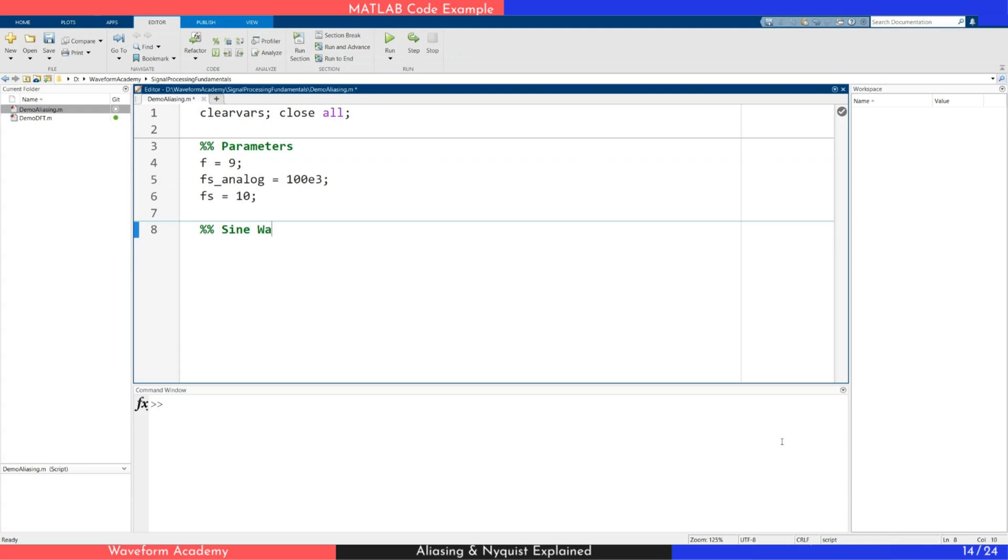Now, let's generate the pseudo-analog sine wave. We start by creating 1 second of time samples, then generate the signal using the sin function and the previously defined frequency.